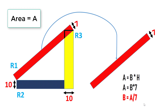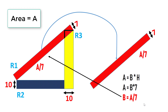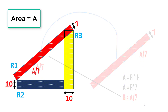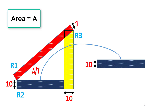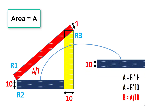Hence in rectangle R1, the height is 7 units and the base is A/7. Now let's consider rectangle R2. In R2, the height of the rectangle is given as 10 units, and the area equation becomes A equals base times 10. Solving this, we get base B equals A divided by 10.